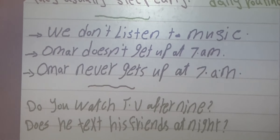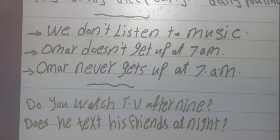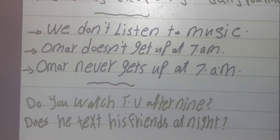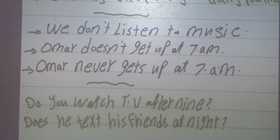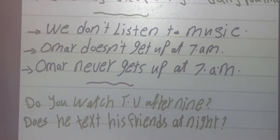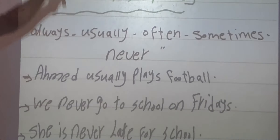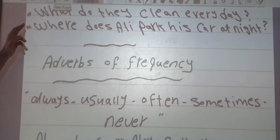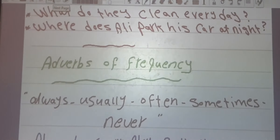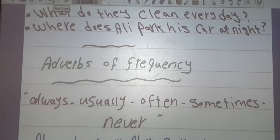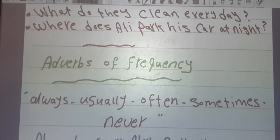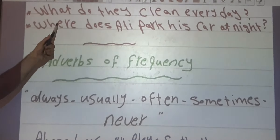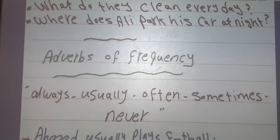If we want to make a yes or no question, we use do and does with the subject and infinitive verb. For example: do you watch TV after 9? Does he text his friends at 9? For WH-questions, we use: WH-word plus do or does, plus subject, plus verb infinitive. For example: what do they do every day? And where does Ali live?